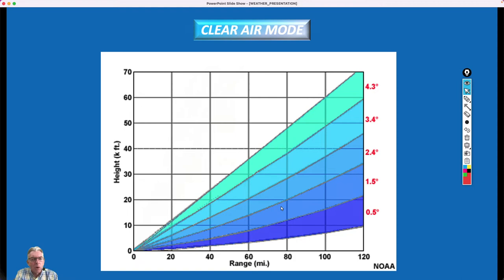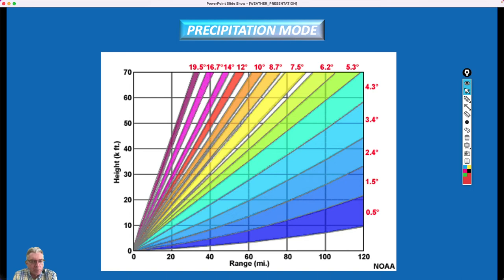Let's go ahead now and take a look at another mode that the radar can be in and that's called the precipitation mode. And here you have a whole bunch of different elevation angles, all the way from half a degree up to 19.5 degrees. And you may wonder, why would you want to go all the way up to 19.5 degrees?